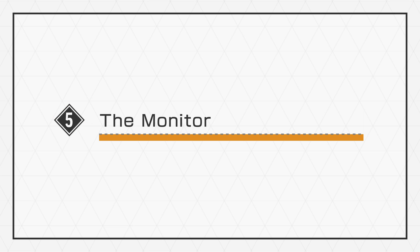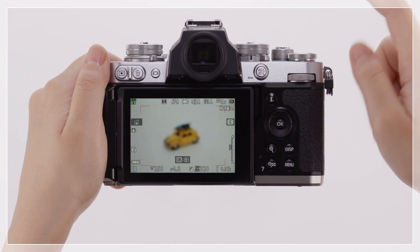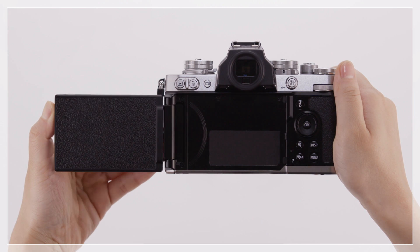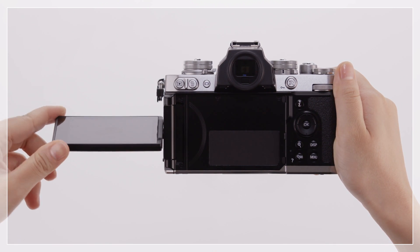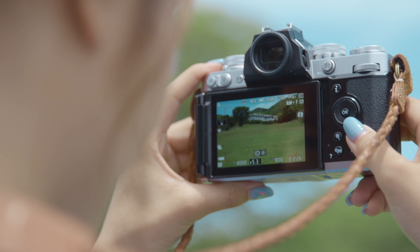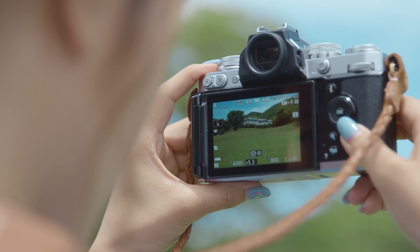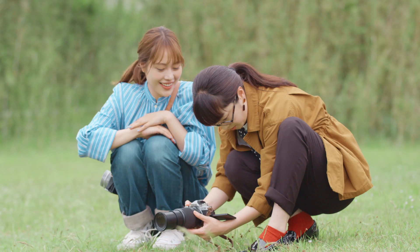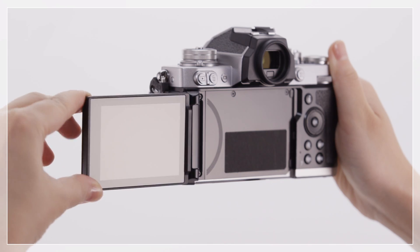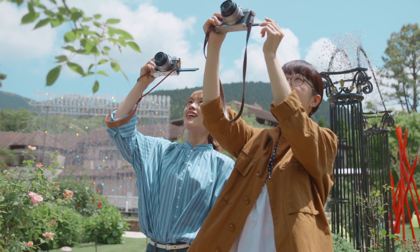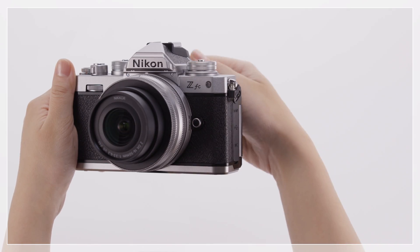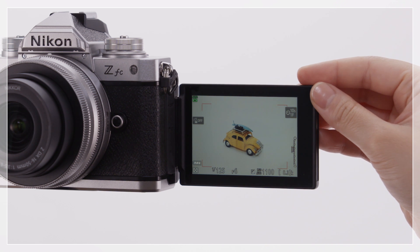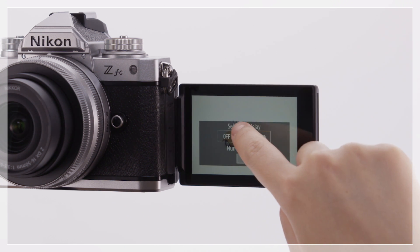The monitor supports touch controls that can be used for such tasks as releasing the shutter. You can change the monitor's facing and angle. For most shots, the monitor can be positioned against the camera body, facing out. But you may find it useful to tilt it up for low angle shots, and down for high angle shots. Rotating the monitor so that it faces the subject automatically selects self-portrait mode. In self-portrait mode, you can set the self-timer and choose the number of shots while viewing the monitor.